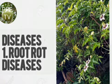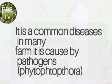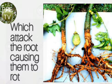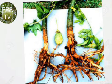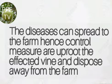Number one, we have root rot disease. Root rot disease is a common disease in many areas or farms. It is caused by pathogens which attack the roots causing them to rot. The signs are shown by yellow leaves and drying of the vine, which seems healthy but upon uprooting the stem is rotten from the roots.